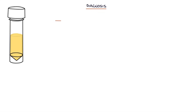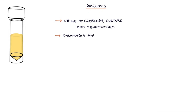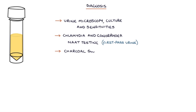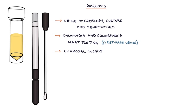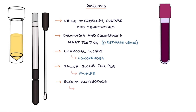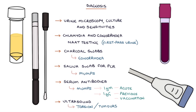Investigations that can help establish a diagnosis are a urine microscopy culture and sensitivities (MCS), chlamydia and gonorrhea NAAT testing on a first-pass urine sample, and a charcoal swab of purulent urethral discharge to look for gonorrhea and test culture and sensitivities. A saliva swab for PCR testing can be used to look for mumps if suspected. You can check serum antibodies for mumps — IgM suggests an acute infection and IgG suggests previous infection or vaccination. Finally, an ultrasound can be useful to assess for torsion or tumours of the testicles.